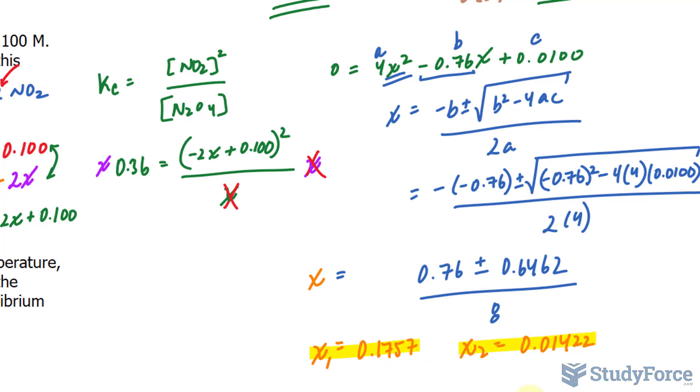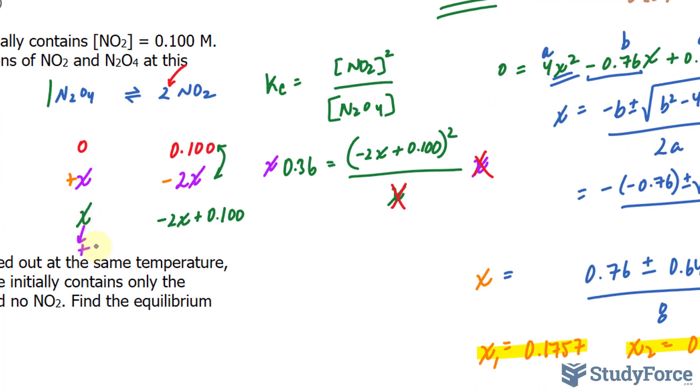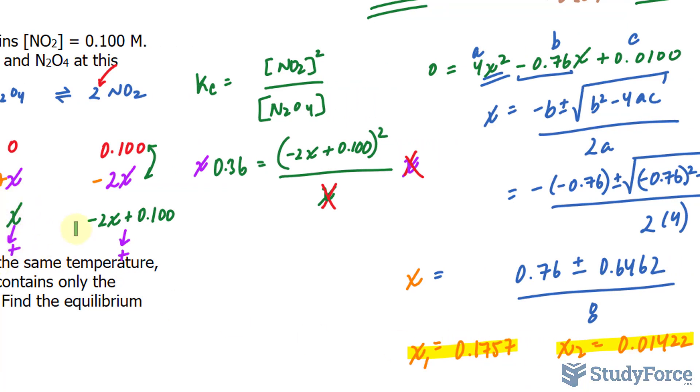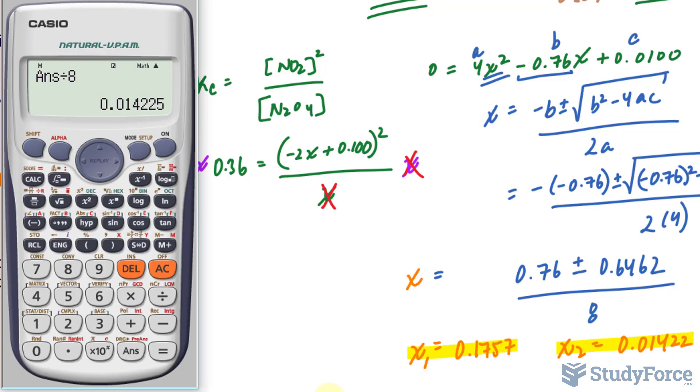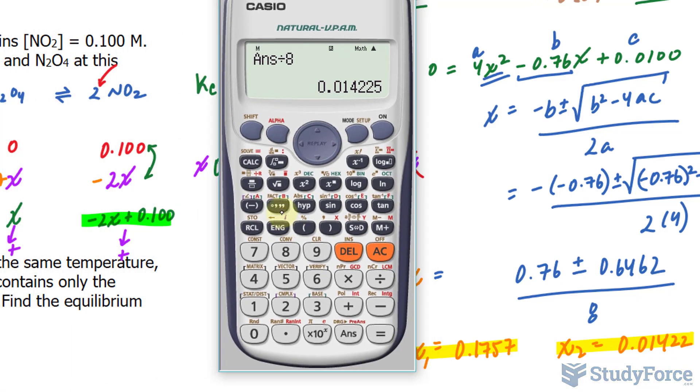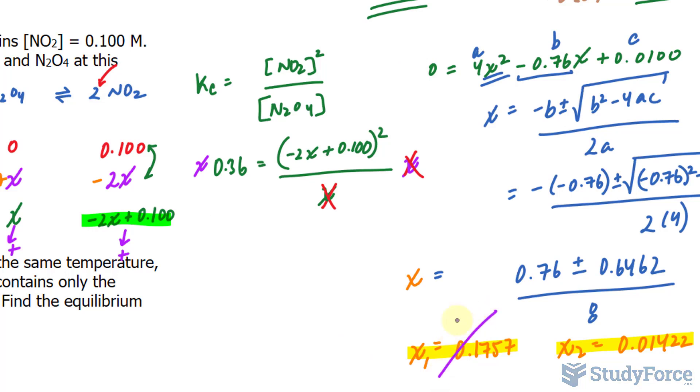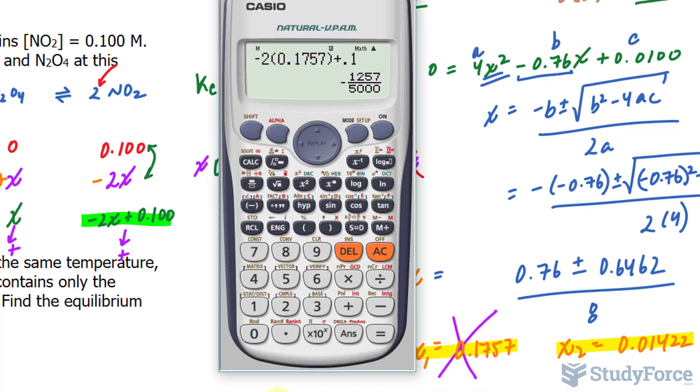So how do we determine which one of these is correct? Well, we go back to our ICE table. And the one that's correct is the one that will give us a positive output here and a positive output here. So both of these will give you a positive output here. So our main focus now is this. Let me substitute 0.1757. So negative 2 times 0.1757 plus 0.1 gives us a negative output. So this can't be our X value. What about that one? So negative 2, again, times 0.01422 plus 0.1, and that gives us a positive output. And that's the number right there. Let me write that down.